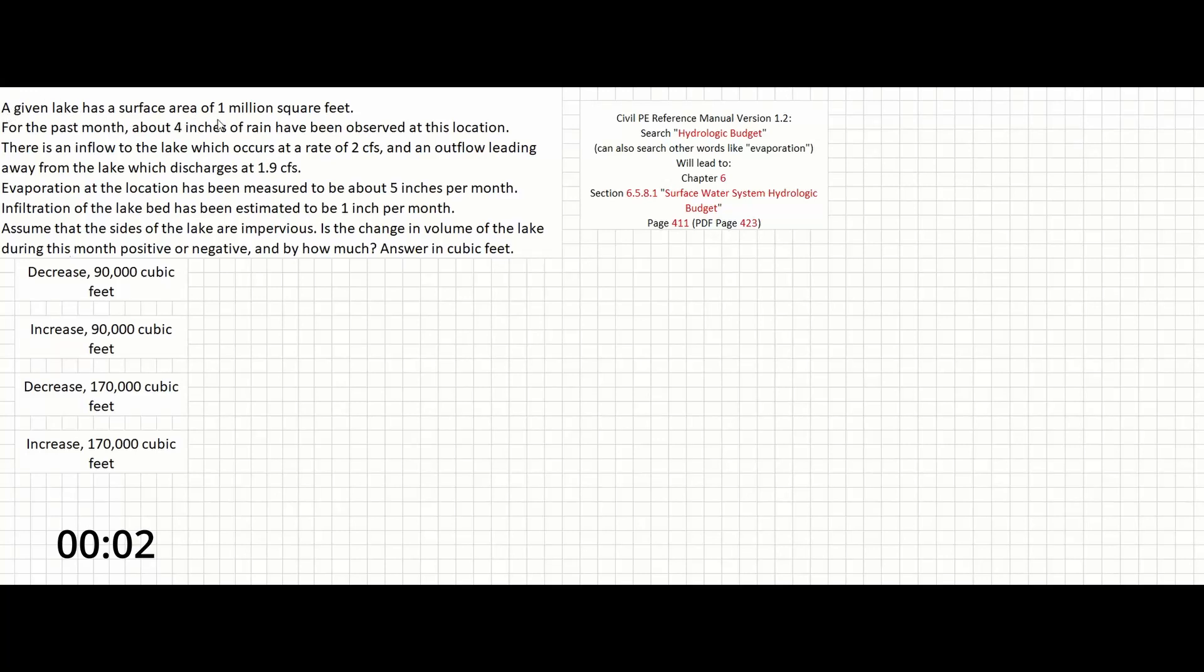A given lake has a surface area of 1 million square feet. For the past month, about 4 inches of rain have been observed at this location. There is an inflow to the lake which occurs at a rate of 2 cubic feet per second and an outflow leading away from the lake which discharges at 1.9 cubic feet per second.